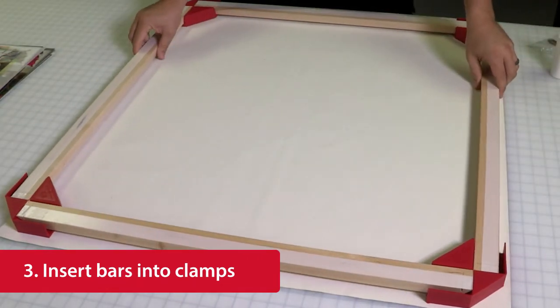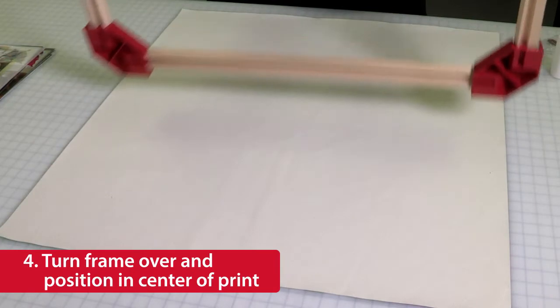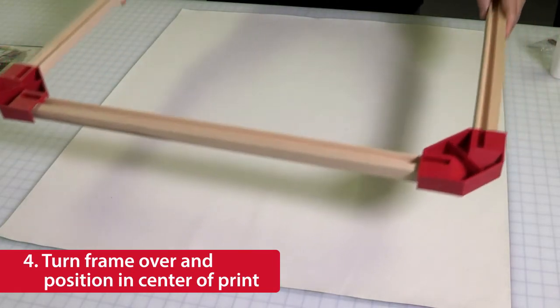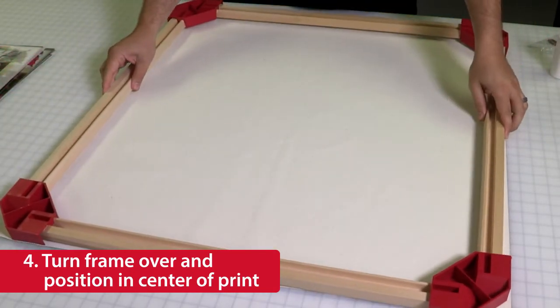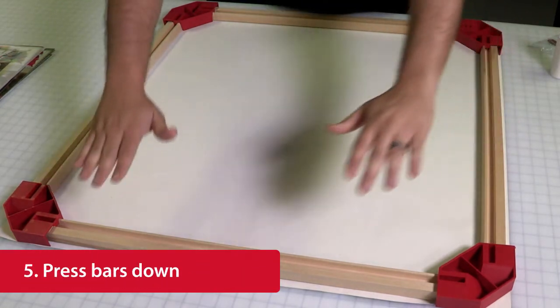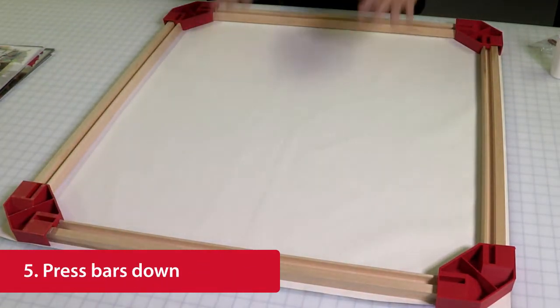After all four bars are in place, turn the frame over and position the stretcher bars in the center of the back of your print. Once it is lined up, simply press the bars down to adhere them to the back of the print.